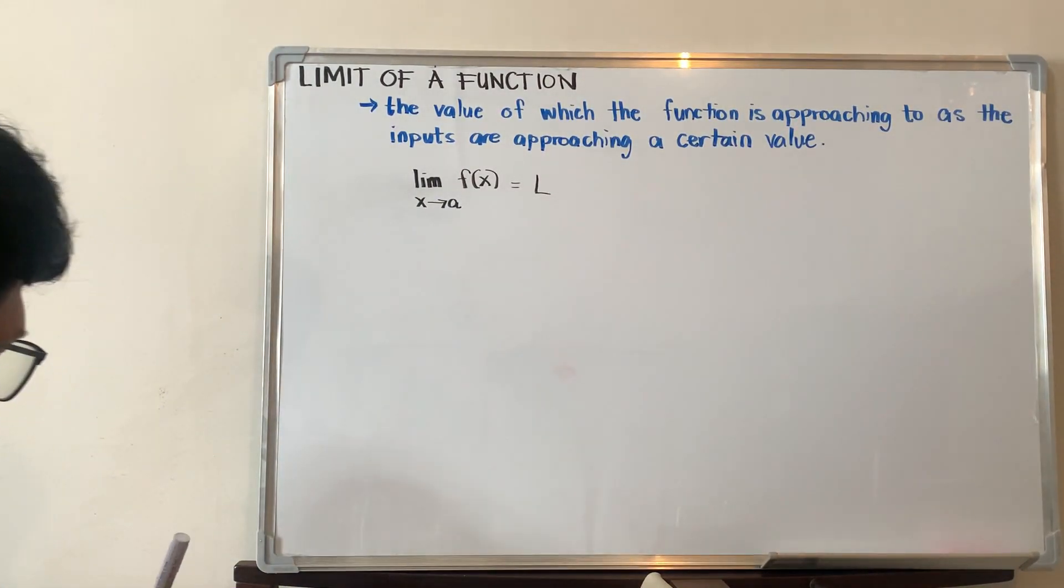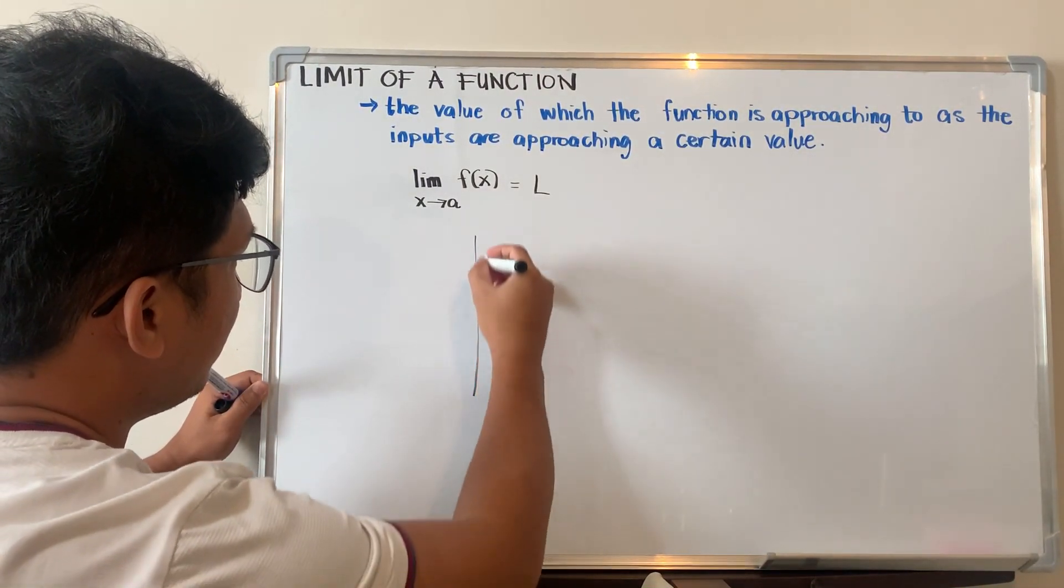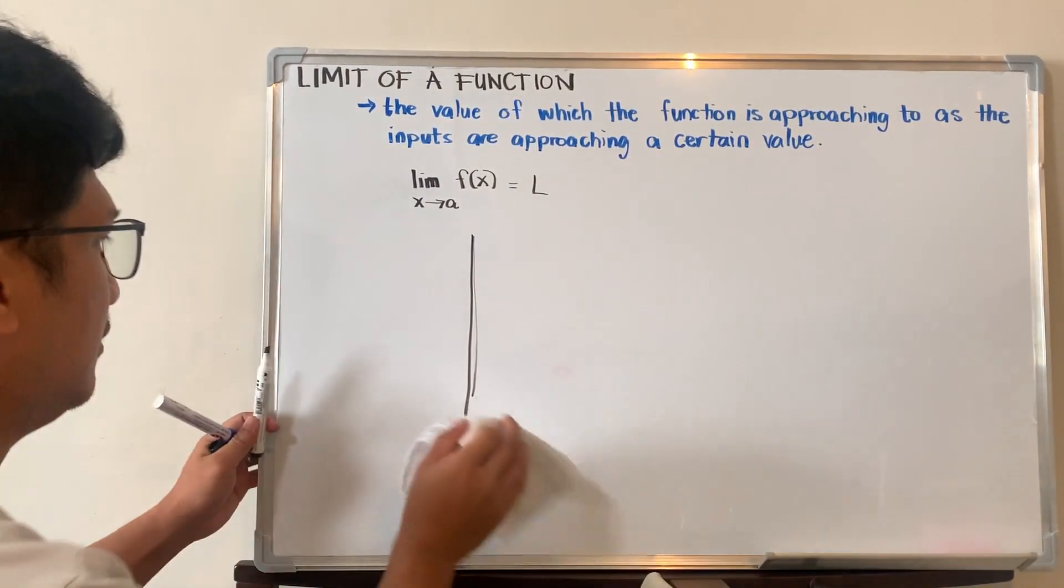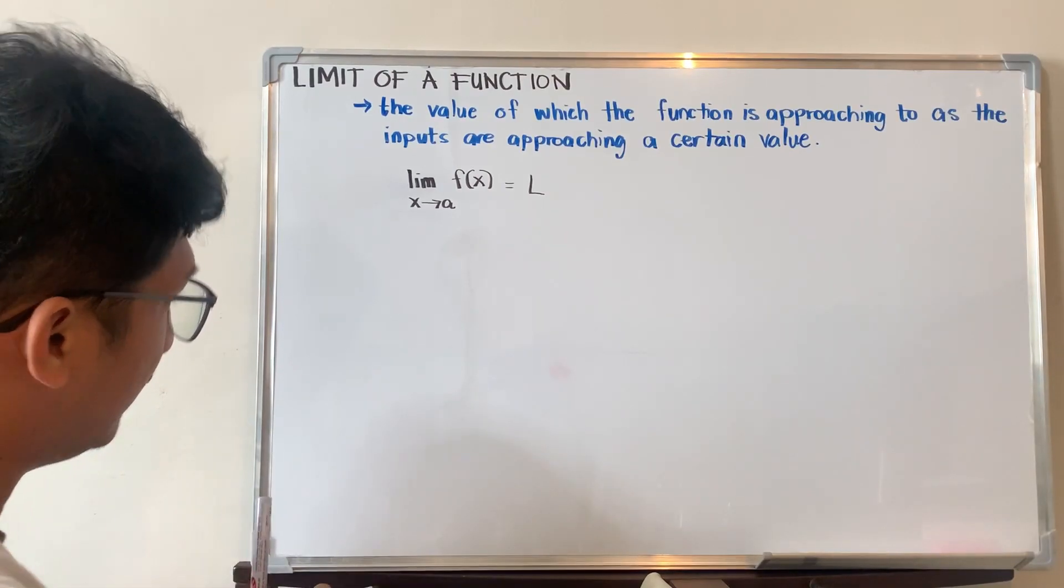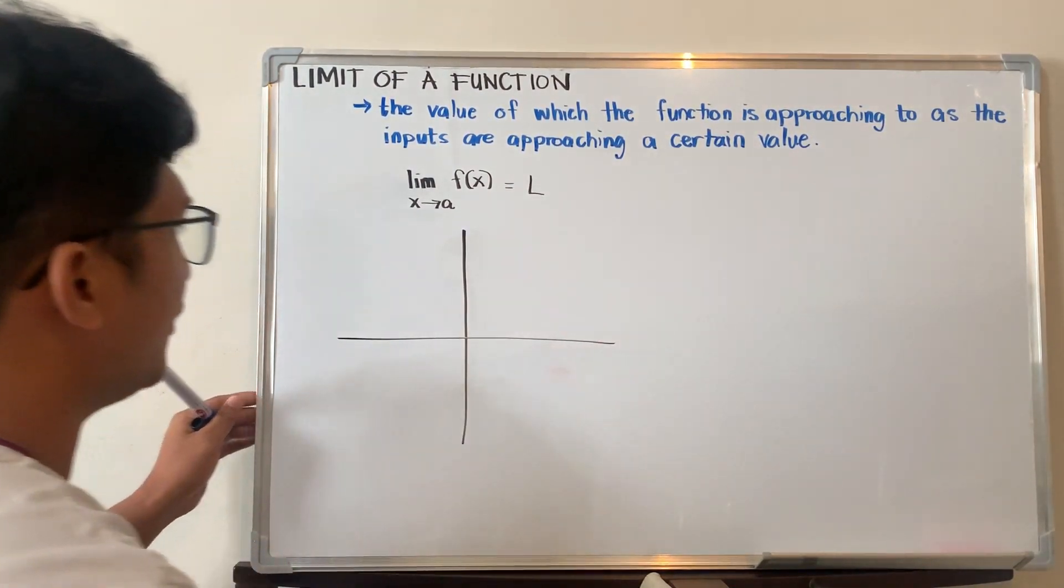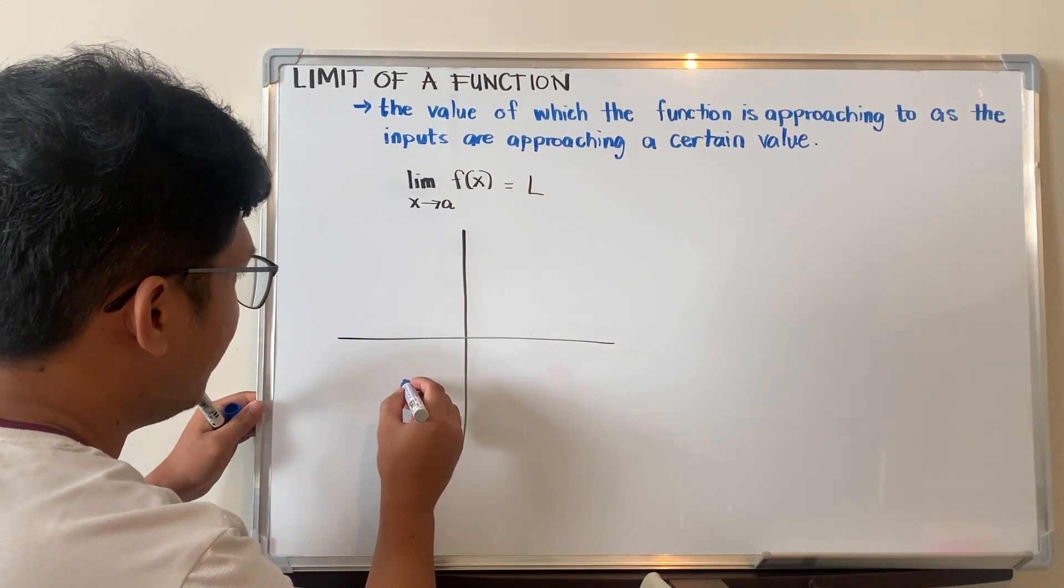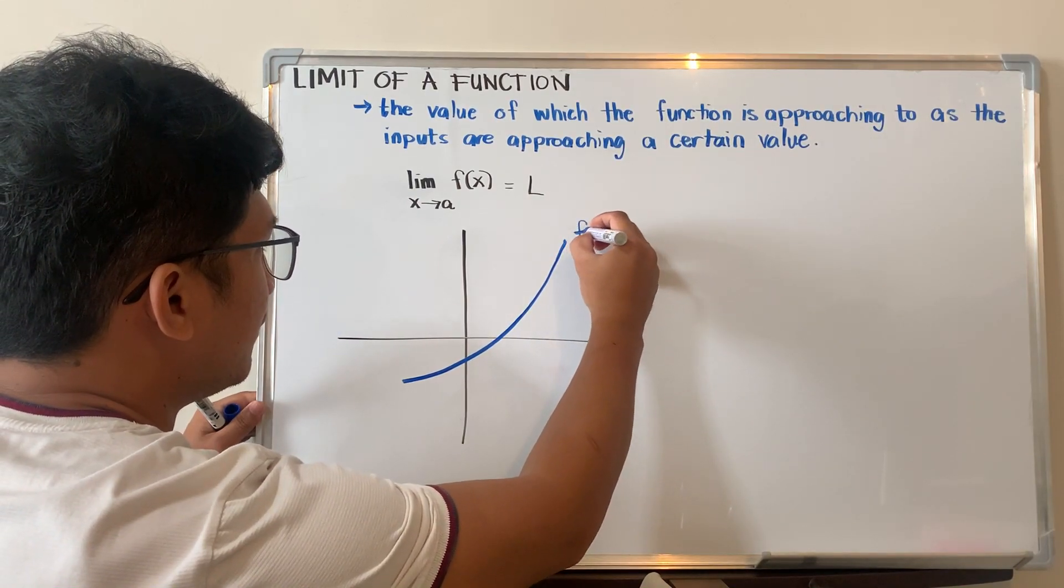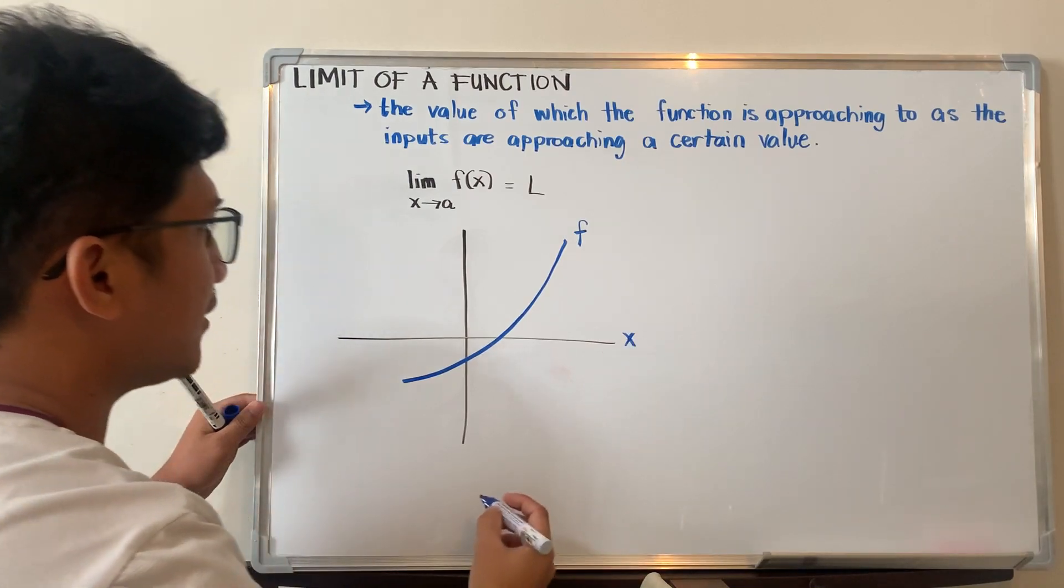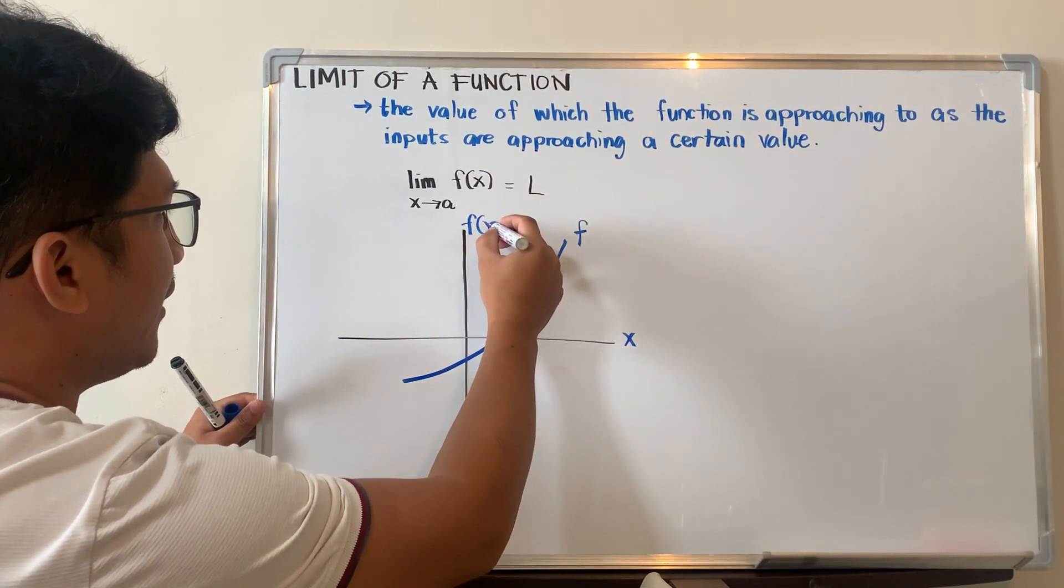By illustration, to be very clear here, let's say this is our x and y axis, or just simply the Cartesian plane, and let's have this as our function. So this is our f or the function. This is our inputs, or the x-axis, and this will be our y-axis, or simply the f of x.